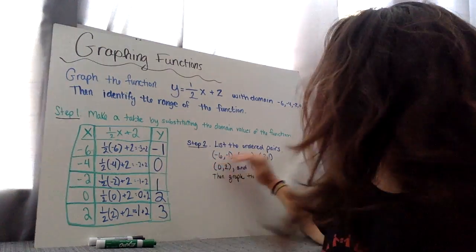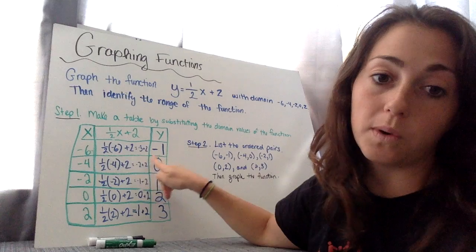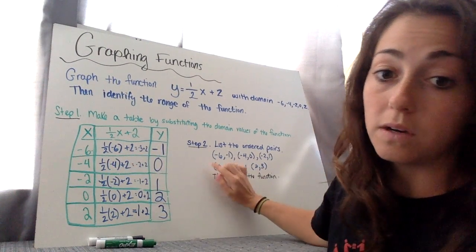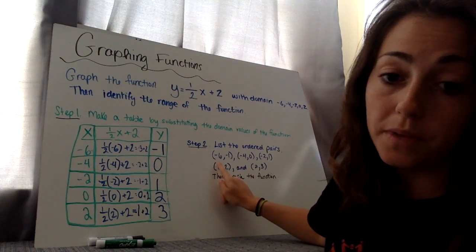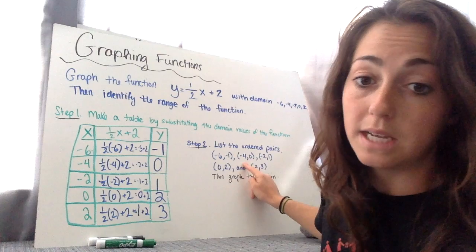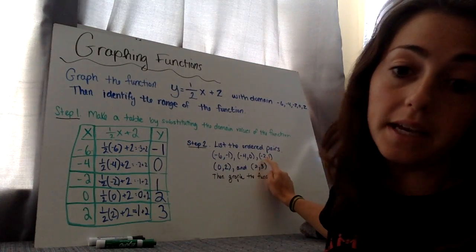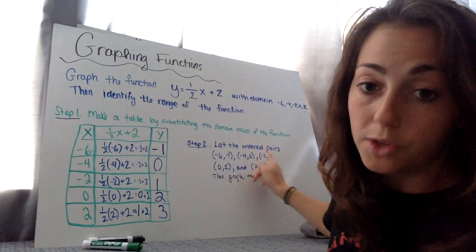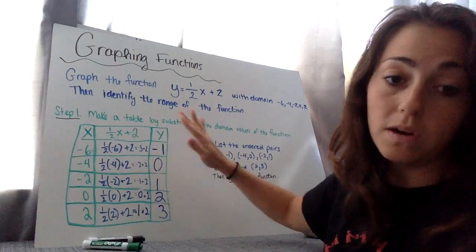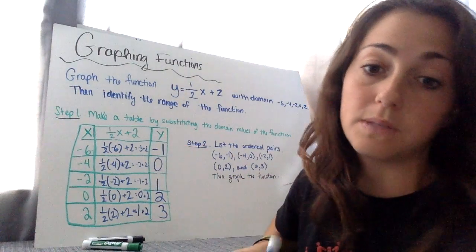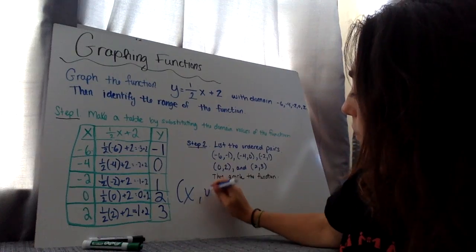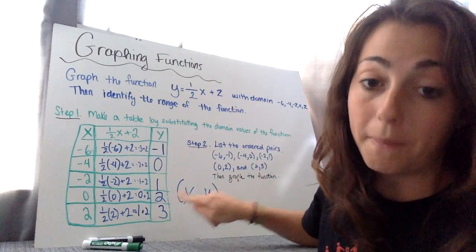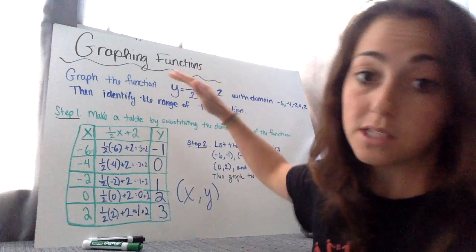Step 2, list the ordered pairs. So my table actually gives me ordered pairs. I have an x value that corresponds with a y value. That's an ordered pair. So my first ordered pair you can see is negative 6, negative 1. I took it straight from my table. The next ordered pair is negative 4, 0. The next is negative 2, 1. And the next is 0, 2. And lastly, 2, 3. Those 5 ordered pairs are coming from here because when I plug in the specific x value, I get that specific y value. Ordered pairs always are x and then y. So this is my x value. When I plug in, I get this y value. They're a pair. They only work together for this function.